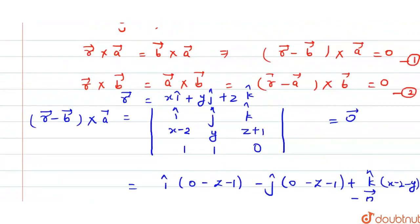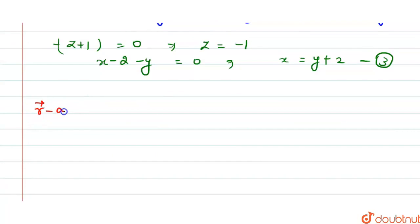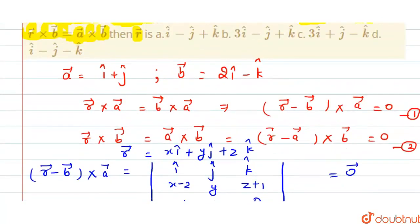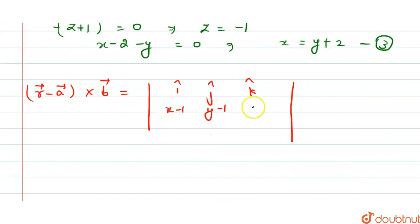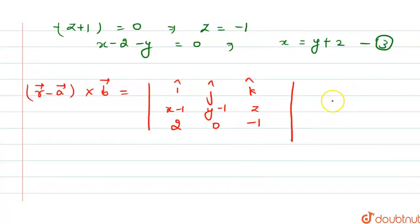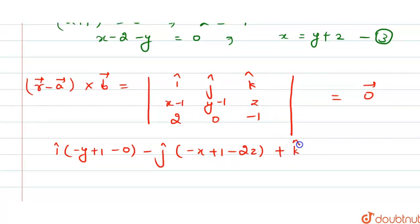From equation 2, we expand r vector minus a vector, cross b vector, equals 0. The components of r minus a are x minus 1, y minus 1, and z. The components of b are 2, 0, minus 1. Expanding: i cap times (minus y plus 1 minus 0), minus j cap times (minus x plus 1 minus 2z), plus k cap times (0 minus 2y plus 2), equals 0 vector.